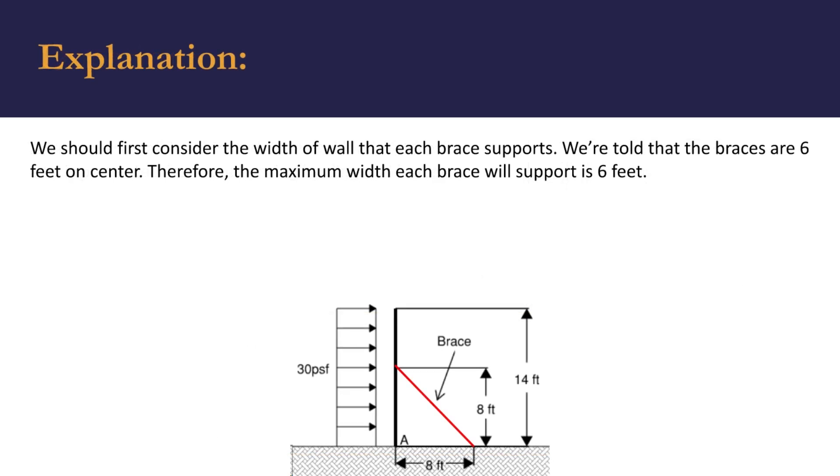We should first consider the width of the wall that each brace supports, and we're told that the braces are 6 feet on center. So the maximum width that each brace will support is 6 feet, and that's the sum of 3 feet on either side.